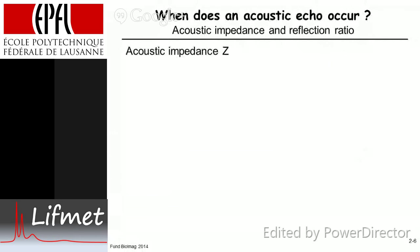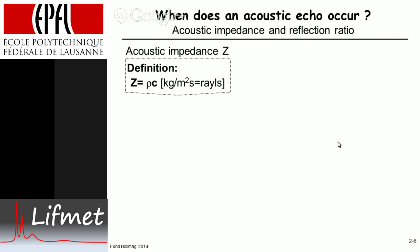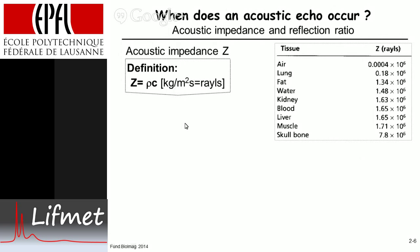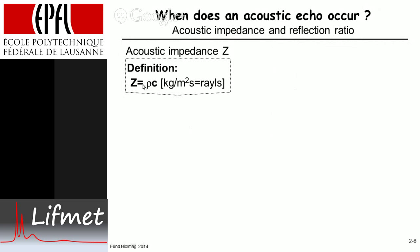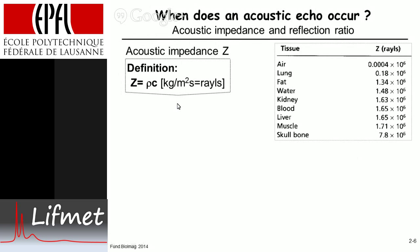When does an acoustic echo occur? We're not going to deal too much with the biophysical details that underlie this — I'm going to be very empirical and introduce the term acoustic impedance, which is given by Z equals the density times the velocity. These are the units, and instead of writing all this out, one calls them 'rails' — don't know why they call them rails, probably some Mr. Rail invented them.